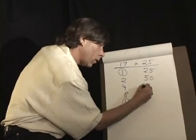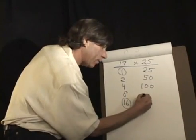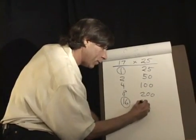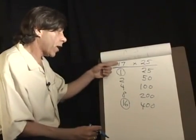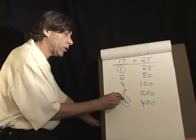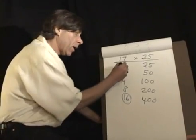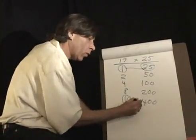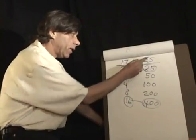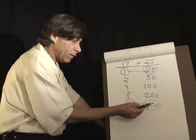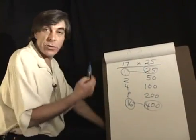Twice that, 100. Twice that, 200. Twice that, 400. So in order to know the product of 17 times 25, we just have to look at which numbers are circled over here and circle the corresponding ones over here and add them together. So 17 times 25 is 400 plus 25, or 425.